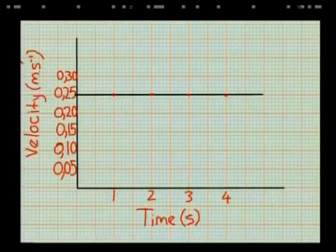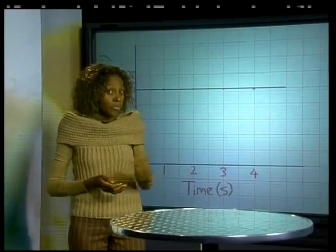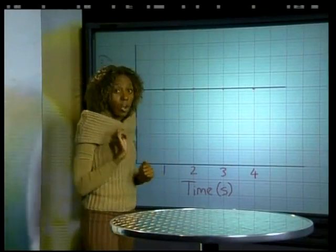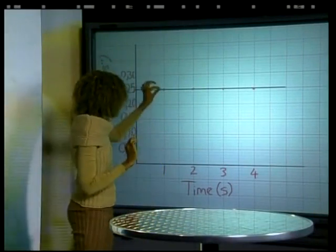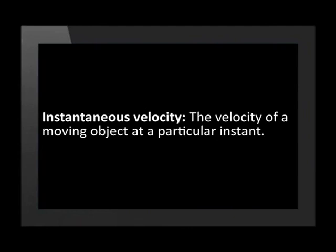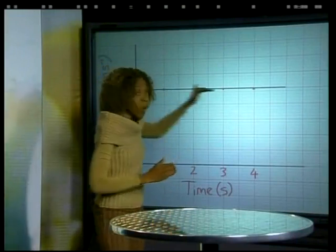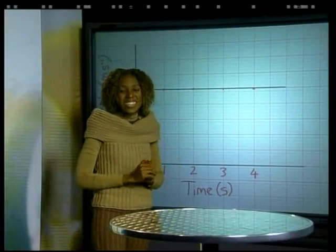Now let's look at another useful graph — the velocity-time graph. What do you think the velocity-time graph for the trolley will look like? I've drawn the velocity on the vertical axis and the time on the horizontal axis. The velocity remains constant at 0.25 meters per second, so the velocity-time graph is a straight line graph parallel to the horizontal axis. The velocity at every small time interval or instant is the same for the total time shown. We call the velocity at a particular instant the instantaneous velocity. When the velocity of a moving object is constant, the average velocity will be the same as its instantaneous velocity.